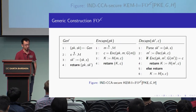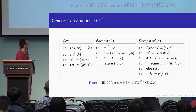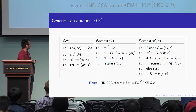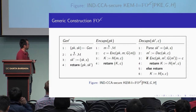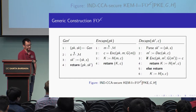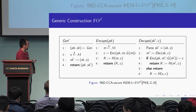We now give a preview of our main techniques. This is the basic FO transformation. We originally have a CPA-secure PKE. One difference here is we use hash function G to encrypt message M to get the randomness from M. After that, we use another random oracle H to derive the final session key. In the decryption oracle, the algorithm checks whether the ciphertext C is correct and only returns the correct session key when the encryption check passes. Finally, we obtain the session key.